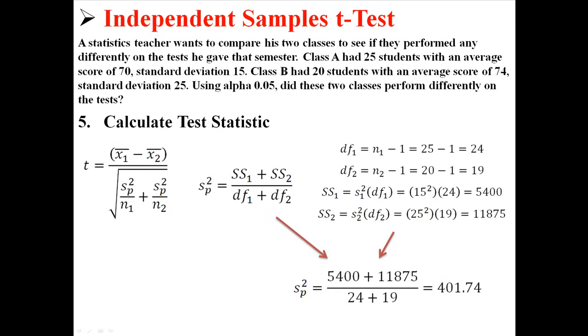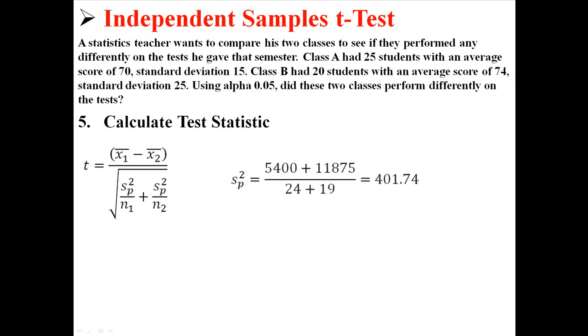So now that we have this pooled variance, I'm just going to delete that stuff and move it up there so I have some space. And now we have all the stuff and we can just plug it into our t equation right here. So I put in the two sample means of 70 and 74. I put in the pooled variance, which is 401.74. And I put in the two sample sizes, which is 25 and 20. And after going through that whole process and solving for all of that, I find out that our t is negative 0.67.